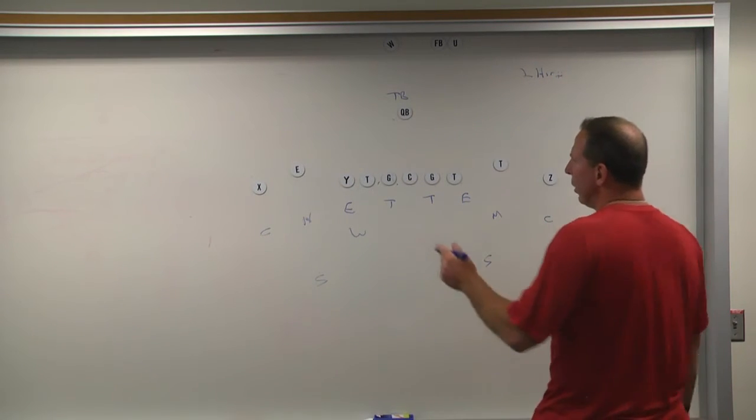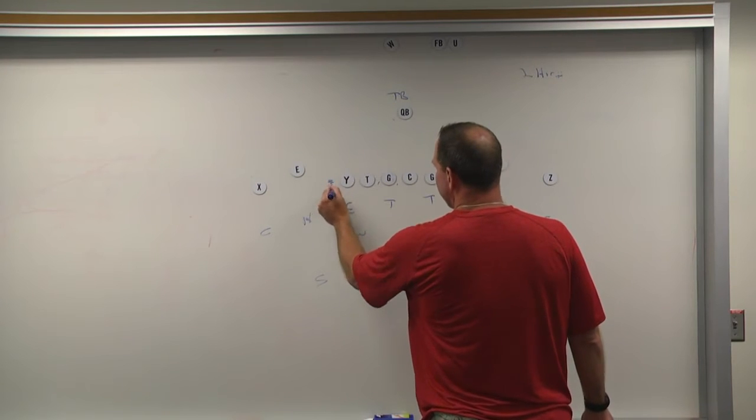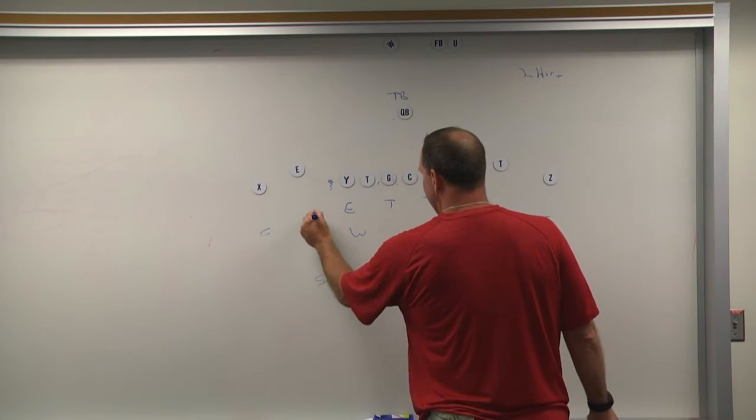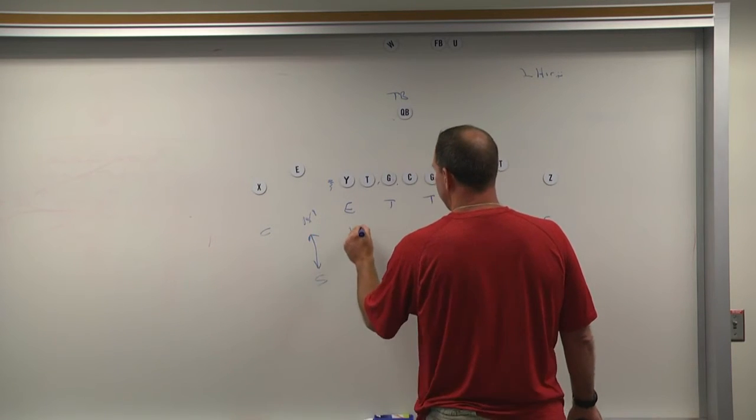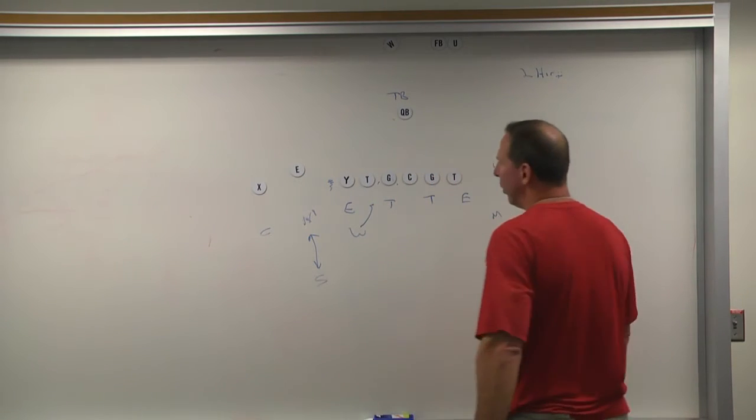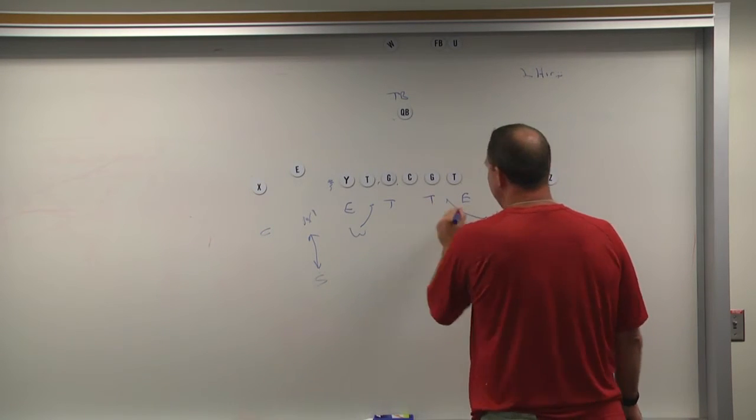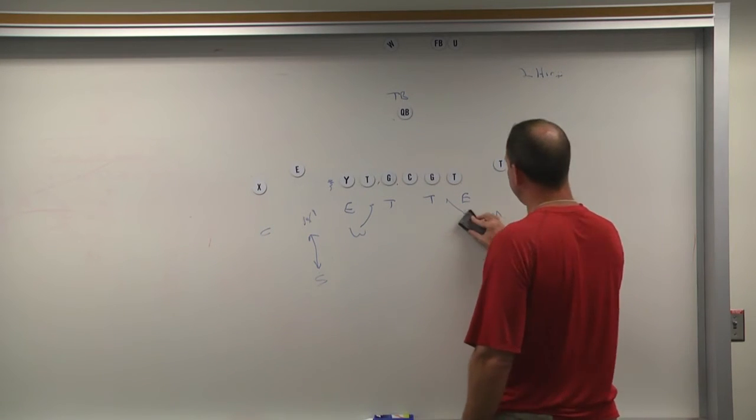So let's say they align like that. They still created an extra gap over here. So it's still the nickel or the safety, one of those two guys. The Will linebacker would have an inside gap over here. The Mike linebacker would have an inside gap over here.